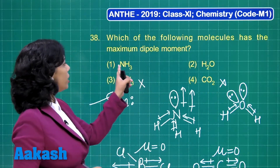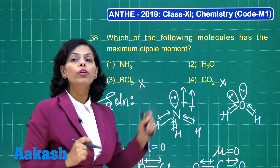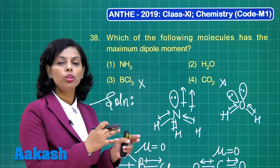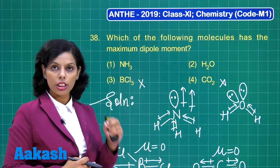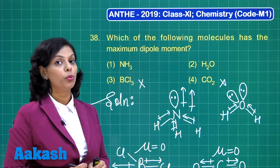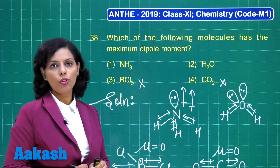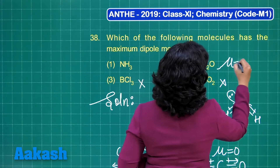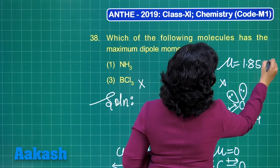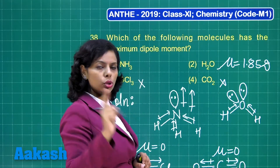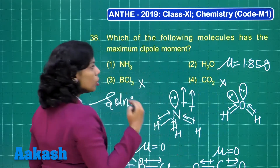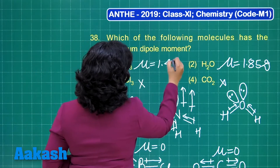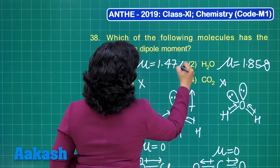Now if I talk about these two molecules, ammonia and water, which of these has more dipole moment? In case of the water molecule, oxygen is more electronegative, so there is more polarity in the bond. Due to more bond polarity, water has more dipole moment — the value is 1.85 Debye — while for ammonia the dipole moment is comparatively less at 1.47 Debye.